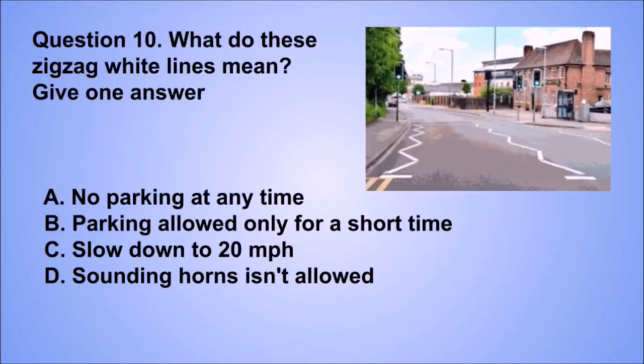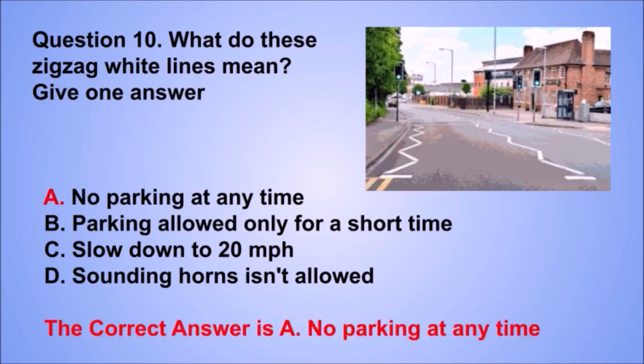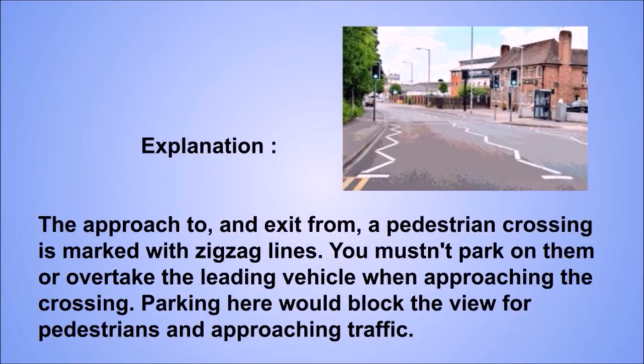Question 10. What do these zigzag white lines mean? The correct answer is A: No parking at any time. The approach to an exit from a pedestrian crossing is marked with zigzag lines — you mustn't park on them or overtake the leading vehicle when approaching the crossing. Parking here would block the view for pedestrians and approaching traffic.